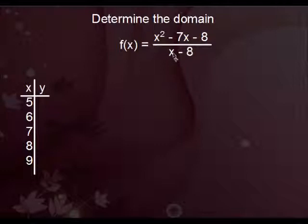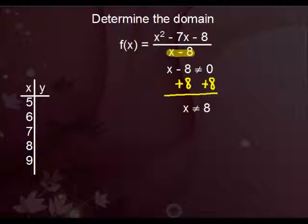And with problems like this, where you have x down here, you always have that issue. Therefore, your domain is just simply going to be anything except whatever makes this part here zero. And since x minus eight cannot be zero, what that means is that x cannot be eight.